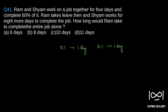Ram and Shyam work on a job together for four days and complete 60 percentage of it. Each day they complete R plus S percentage of the job. So four into R plus S equals 60, which implies R plus S is equal to 60 by 4, that is 15.